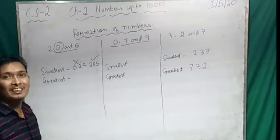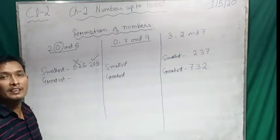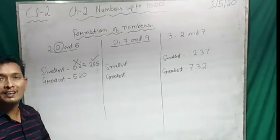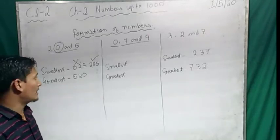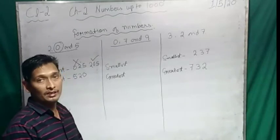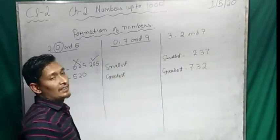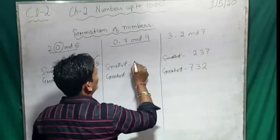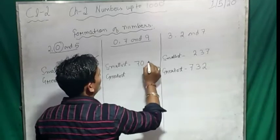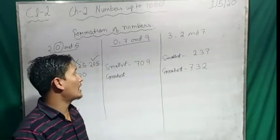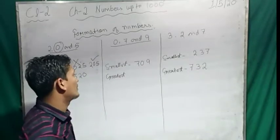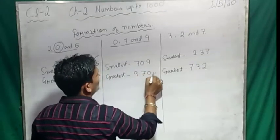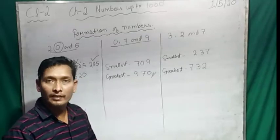For the greatest number from 2, 0, 5: start with the greater number and follow with smaller. So 5, 2, 0 — giving 520 as the greatest. Now another example with digits 0, 7, and 9. For the smallest, we start with 7 (not 0), then 0 in the middle, then 9 — giving 709. For the greatest, start with 9, then 7, then 0 — giving 970. So 709 is the smallest and 970 is the greatest number.